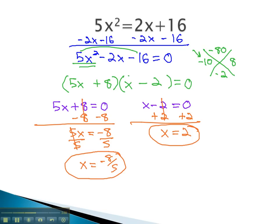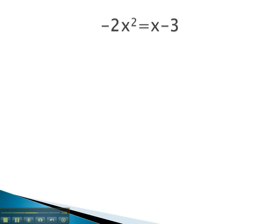Let's try one more example where we have to make it equal 0 first before we can factor and set each factor equal to 0. In this problem, we notice the x squared is negative. We like it to be positive, so we're gonna move it over to the other side. We do this by adding the 2x squared to both sides. We now have 0 equals 2x squared plus x minus 3.